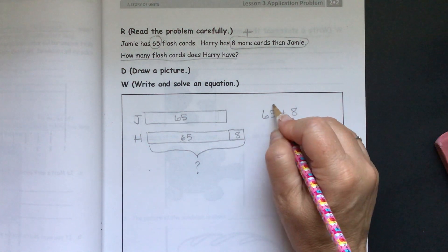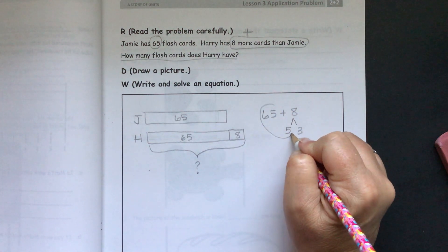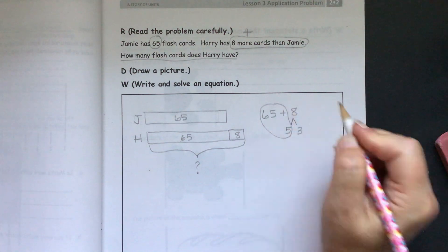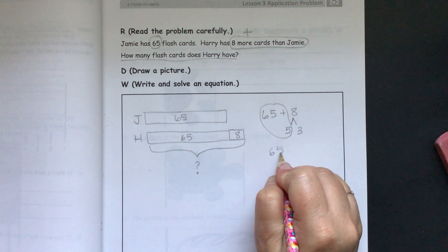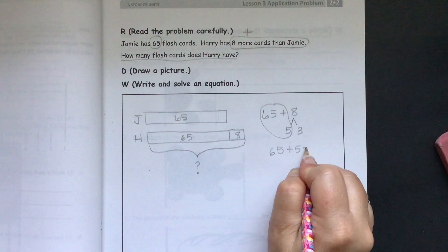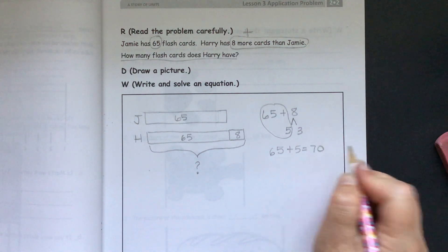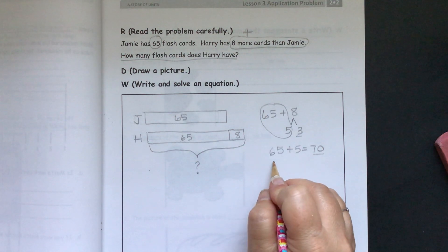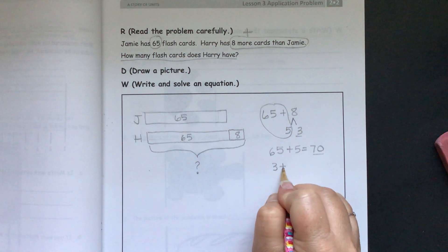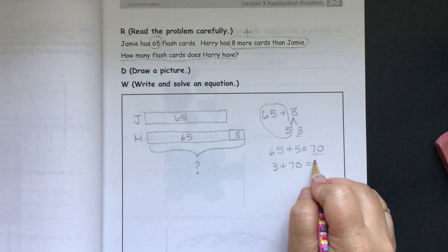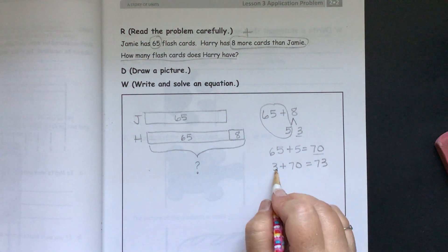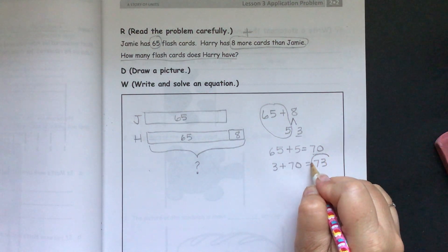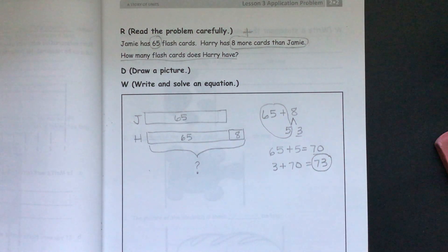We're going to add 65 plus 5 equals 70. Then we have to use our leftovers. So, we have 3 plus 70 equals 73. Or you could have written 70 plus 3. And then our answer is 73.